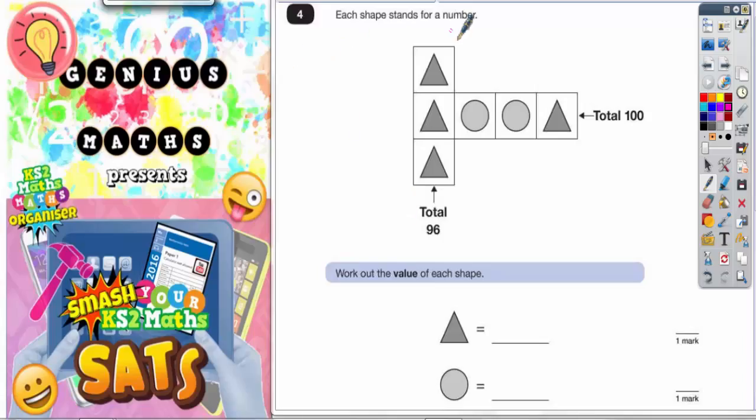Question 4: Each shape stands for a number. We've got to figure out what the triangles are worth and what the circles are worth and write those in the answer boxes here.